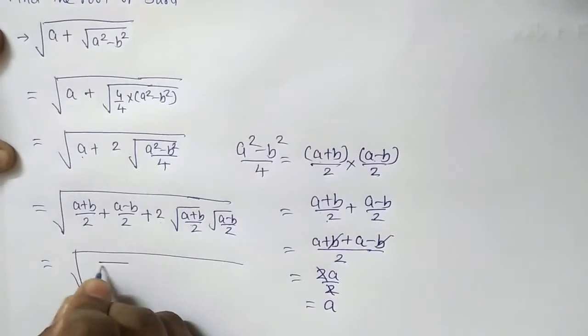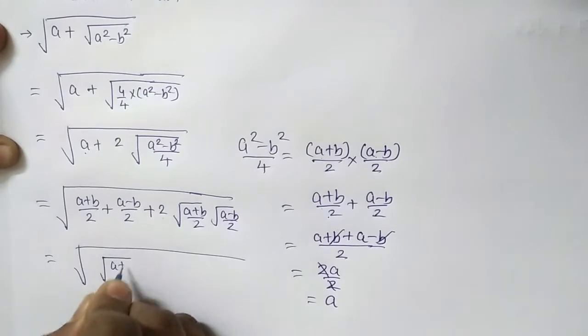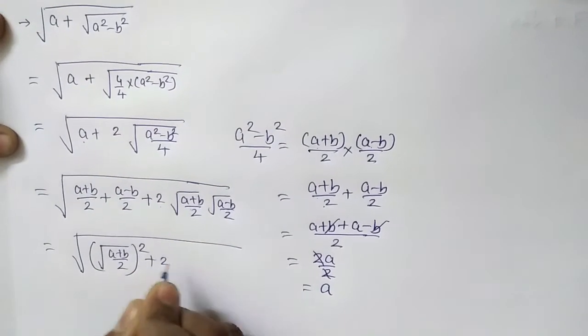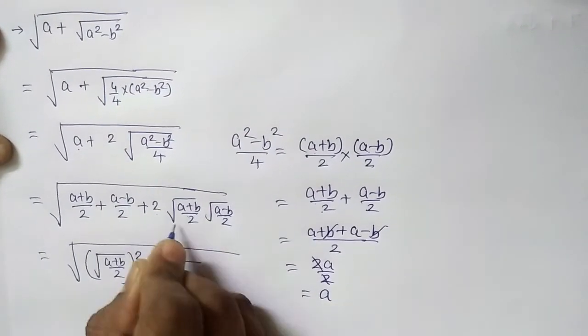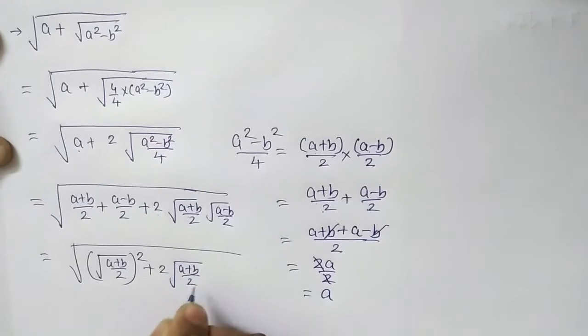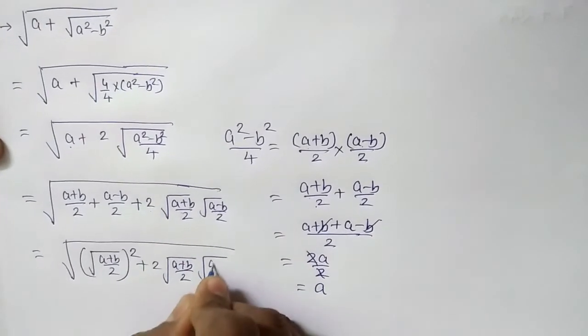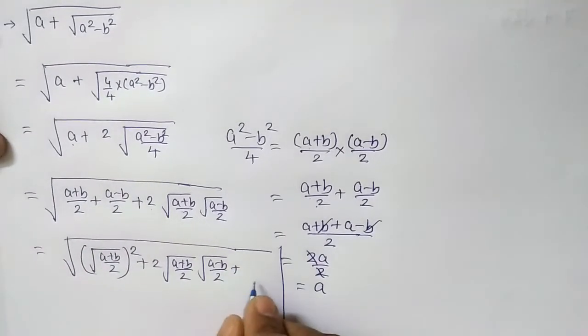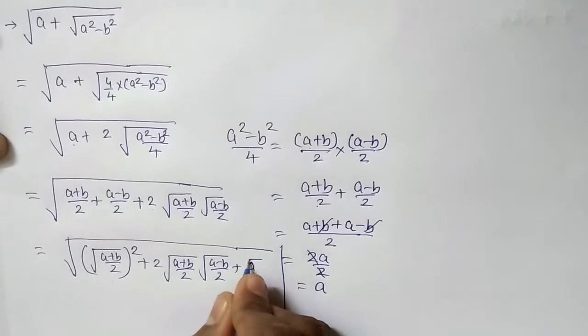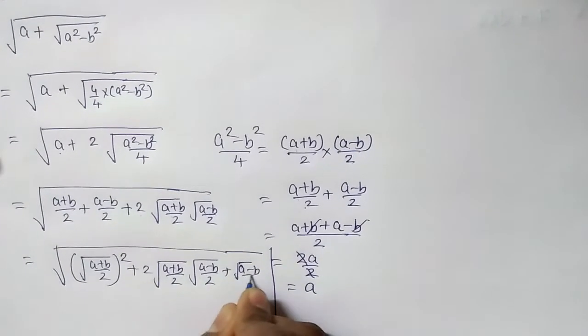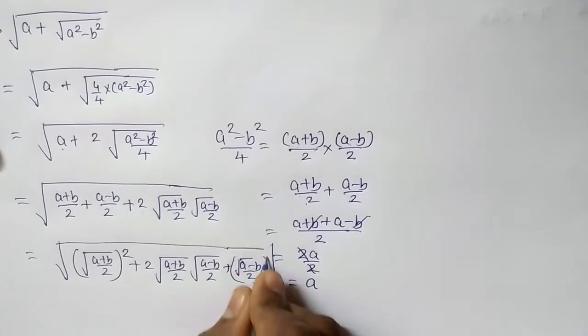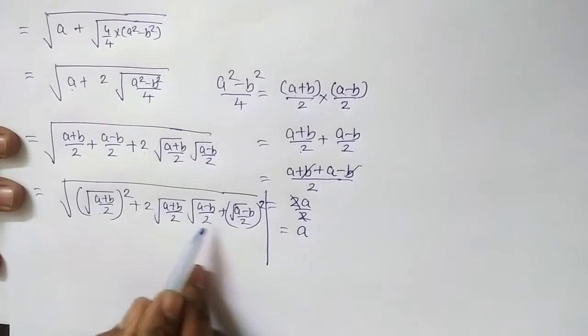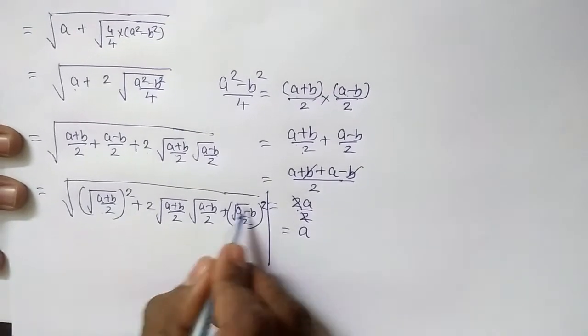So I should write it like under root of a plus b by 2, a minus b by 2. It is whole square. So it is like a square plus 2 into first, that is a into b plus b plus b square. This is the answer.